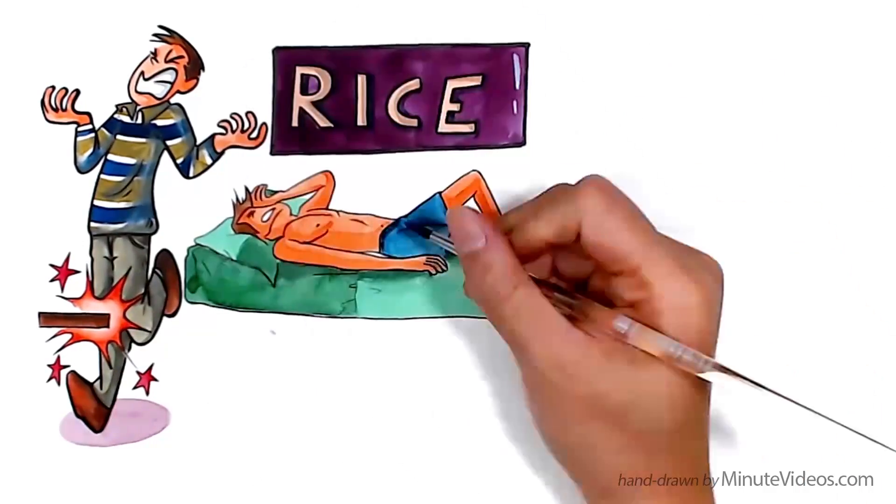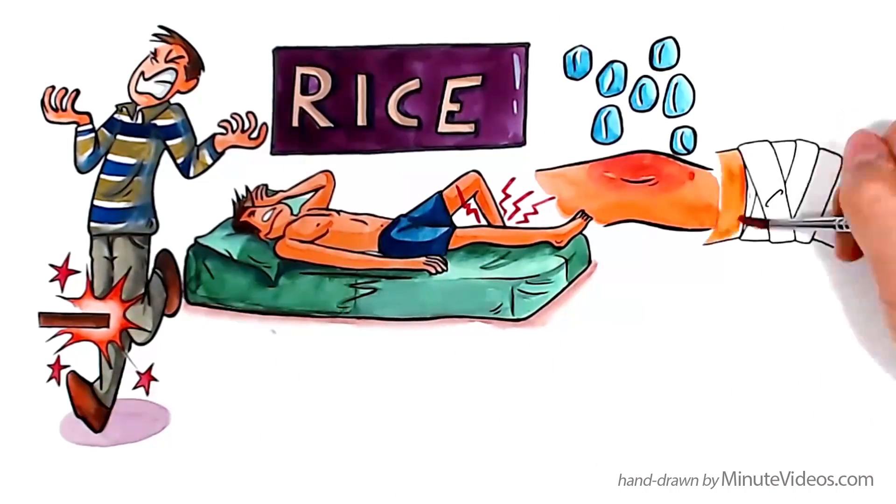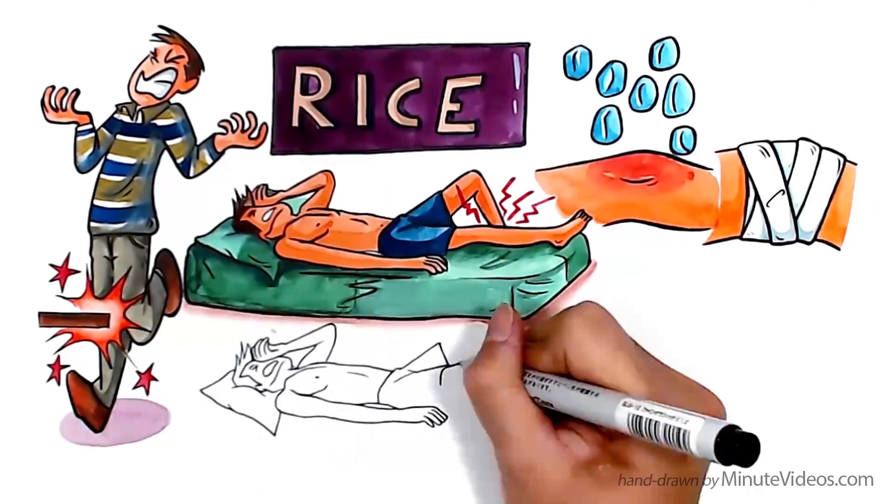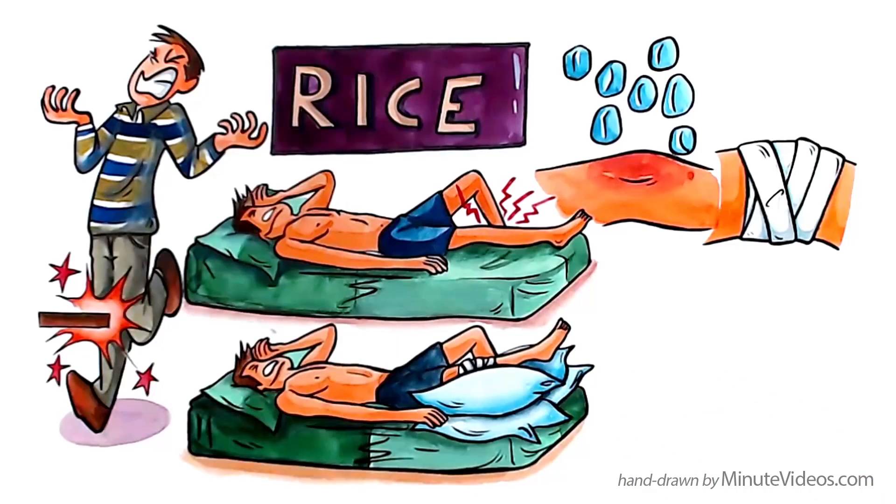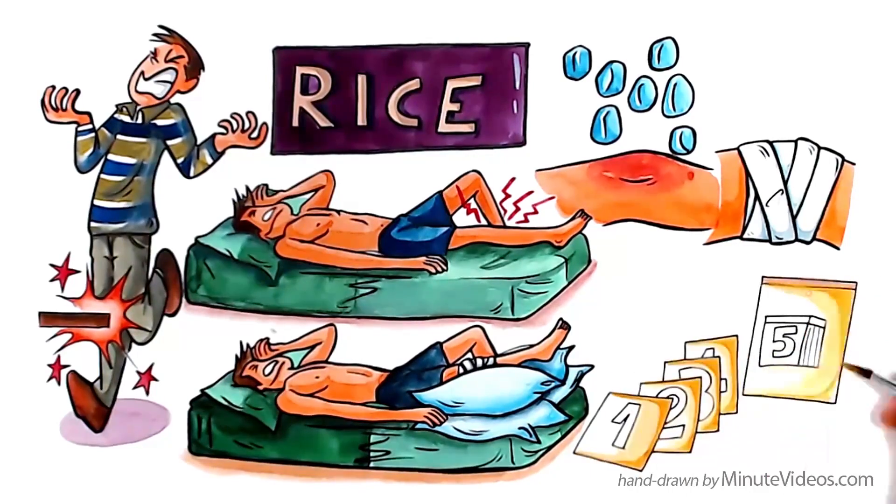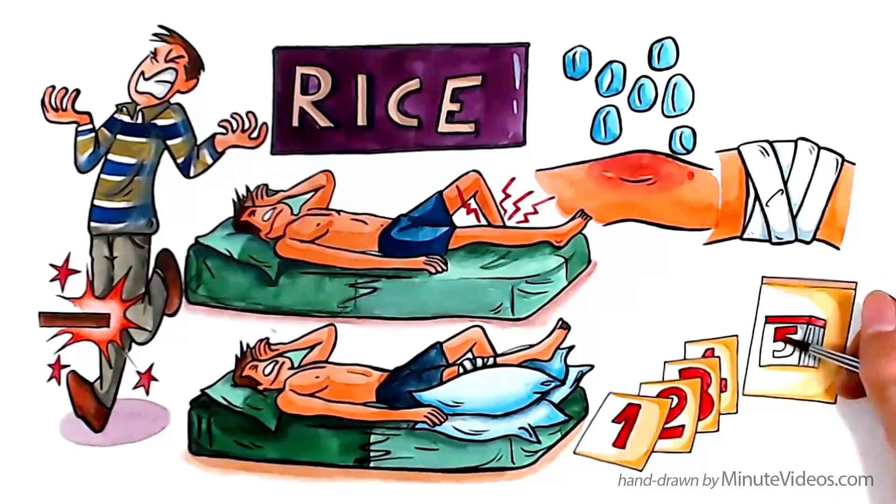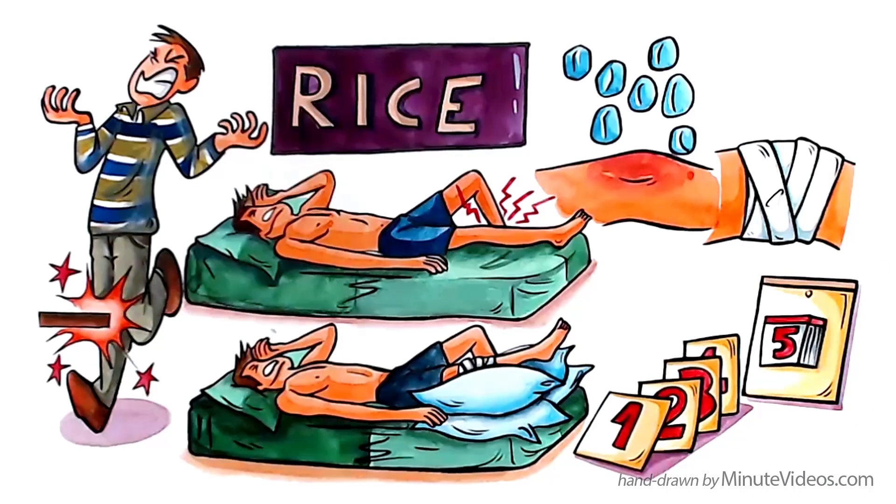REST prevents further irritation and injury. Ice and compression reduces swelling, and elevating the injury above the level of the heart allows the swelling to drain. RICE is generally done for three to five days after an injury, but it can be used whenever the inflammation flares up.